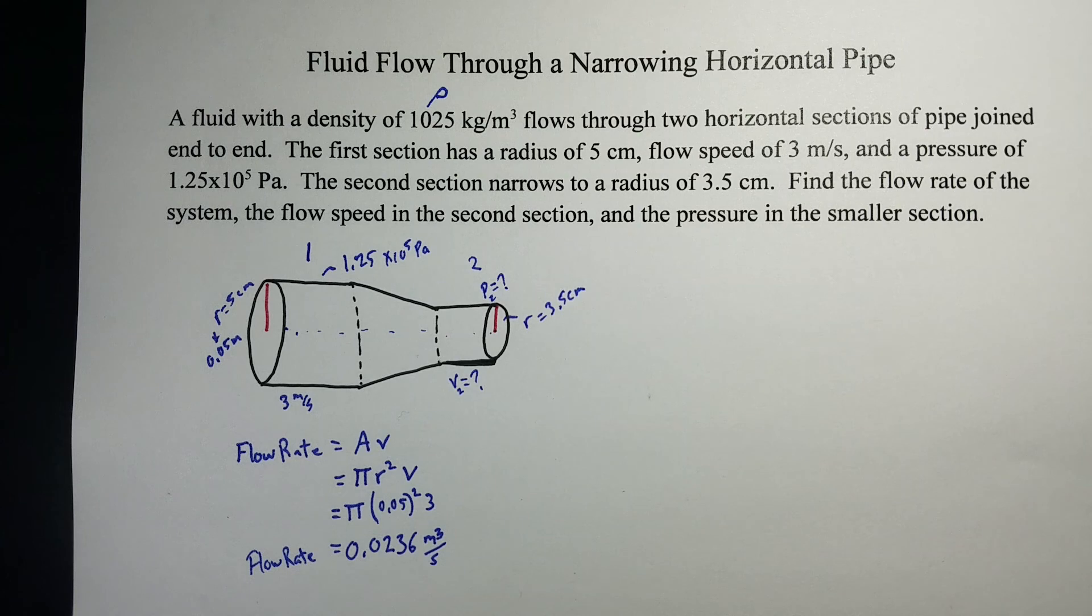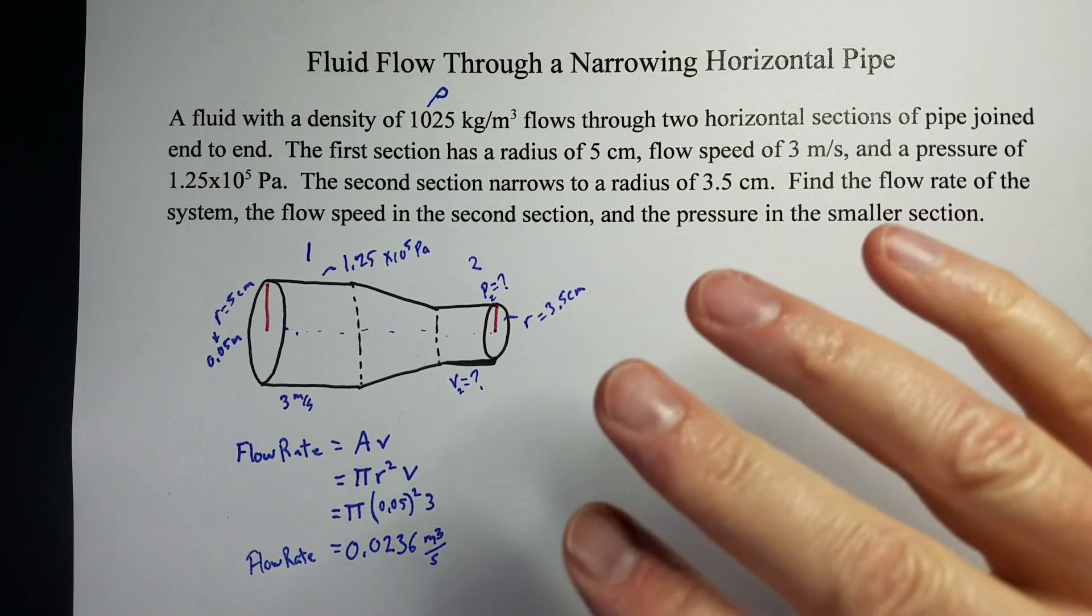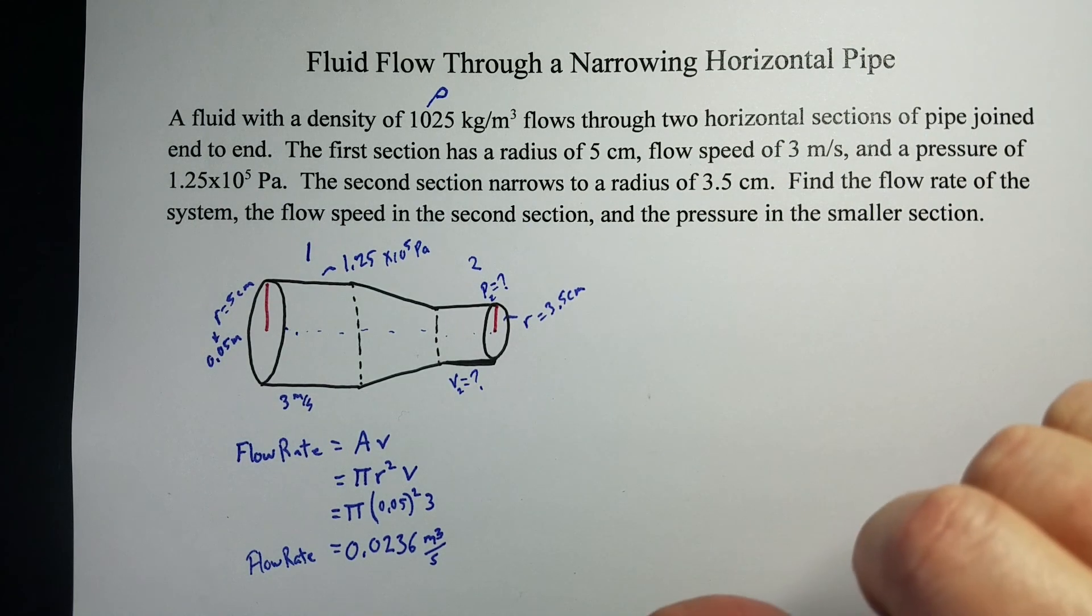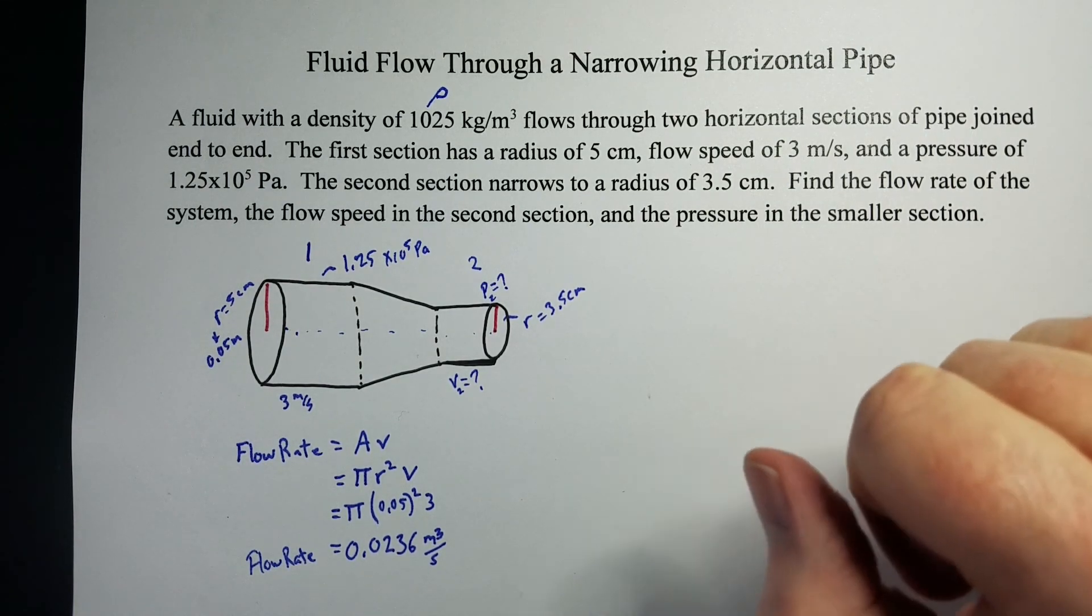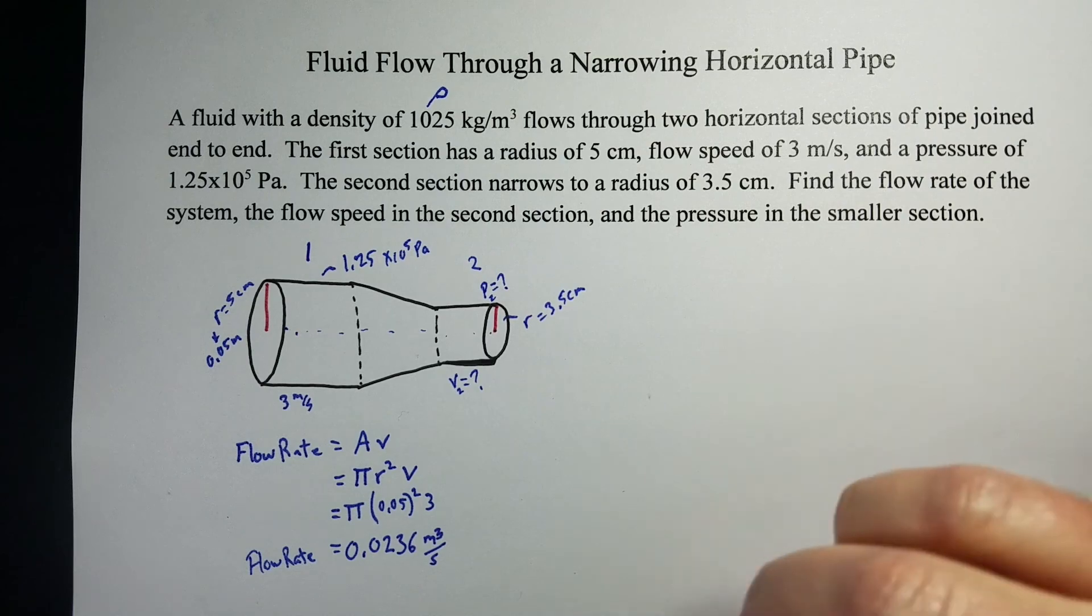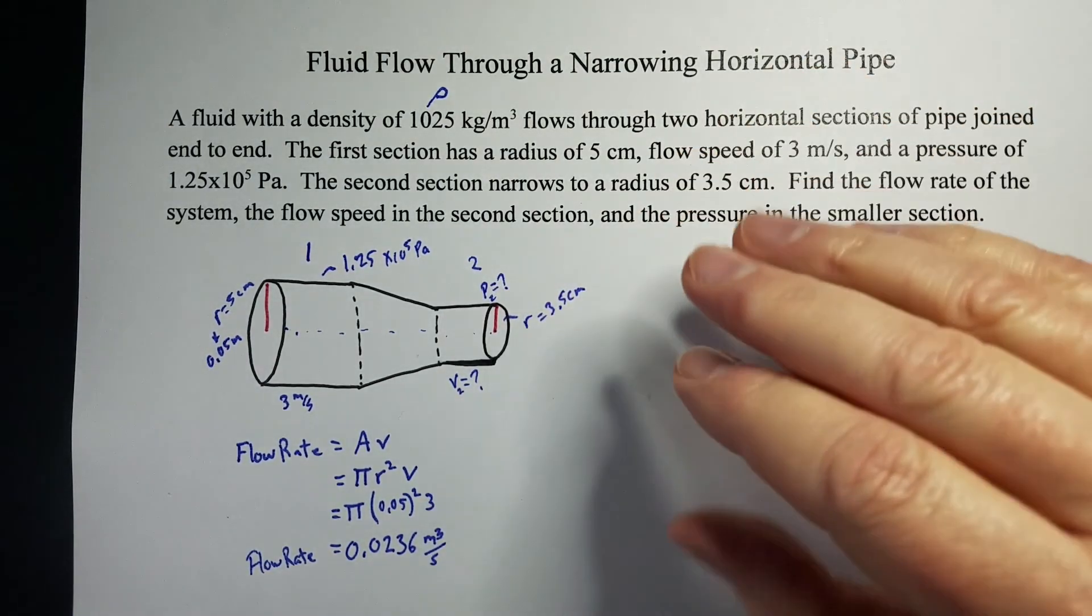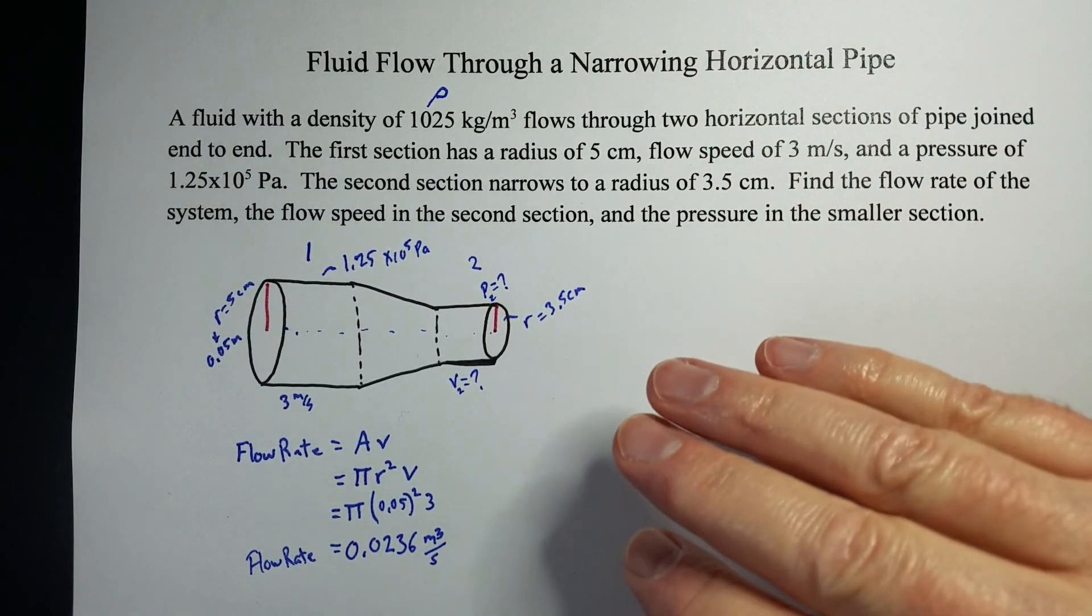Now that we've done that, let's figure out what happens when the pipe narrows. So, when the pipe narrows, you think about Bernoulli's equation, Bernoulli's principle. So, as we close things off, a couple of things happens. The fluid flows faster, and the pressure should drop in that part.